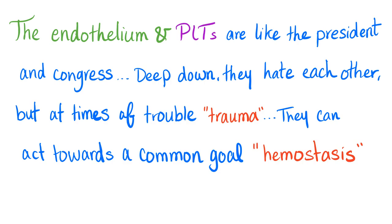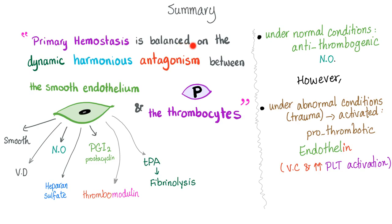Here's a nice analogy: the endothelium and platelets are like the president and congress — deep down they hate each other, but at times of trouble, also known as trauma, they act toward a common goal — hemostasis, which is blood coagulation to stop bleeding. We have primary hemostasis thanks to the platelet plug, and secondary hemostasis by the coagulation factors.